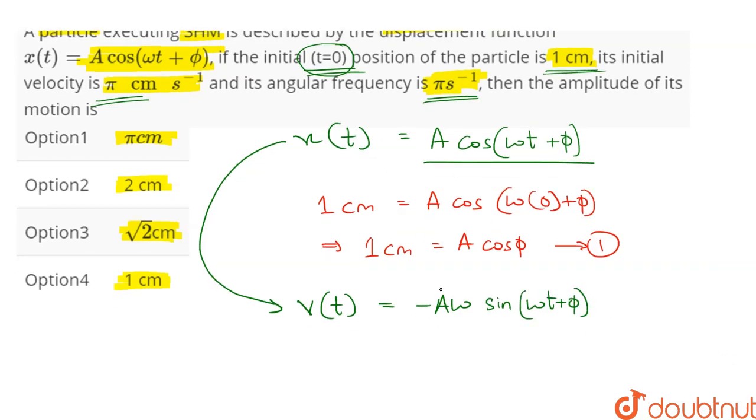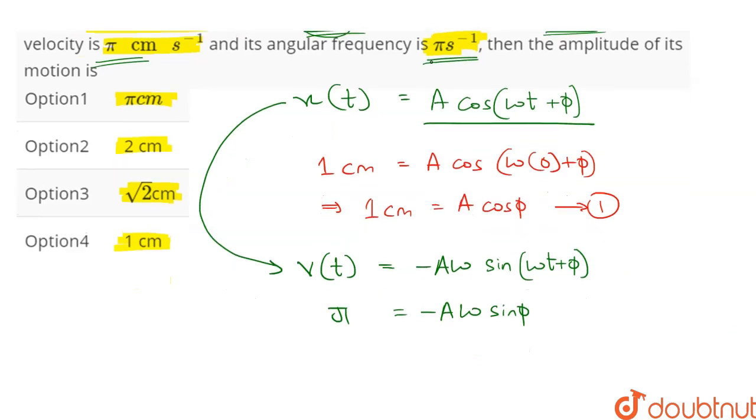At t = 0, that is -Aω sin φ, v is π cm/s, and omega is also given to us as π/s. So we get π = -Aπ sin φ.